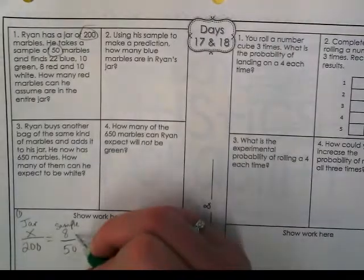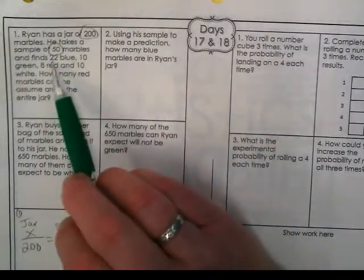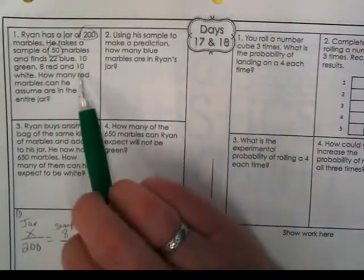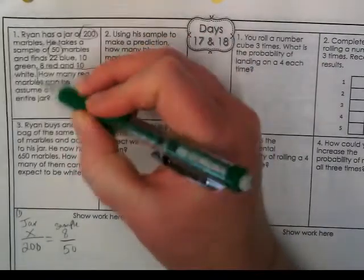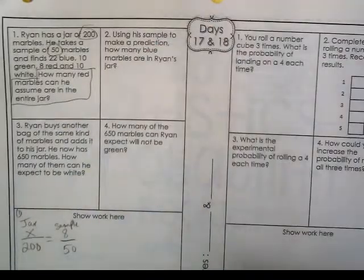And why do I have this 8 here? Because the rest of the problem says he finds 22 blue, 10 green, 8 red, and 10 white. Then the question is right here. How many red marbles can he assume are in the entire jar?